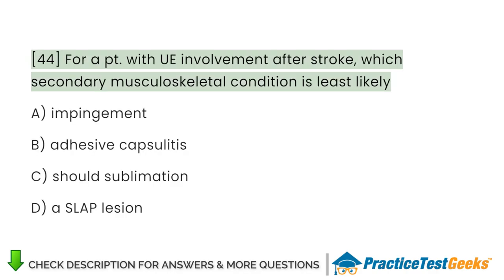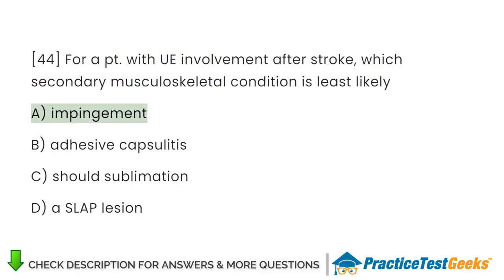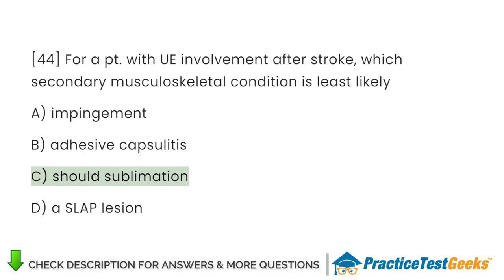For a patient with upper extremity involvement after stroke, which secondary musculoskeletal condition is least likely? A. Impingement. B. Adhesive capsulitis. C. Shoulder subluxation. D. A SLAP lesion.